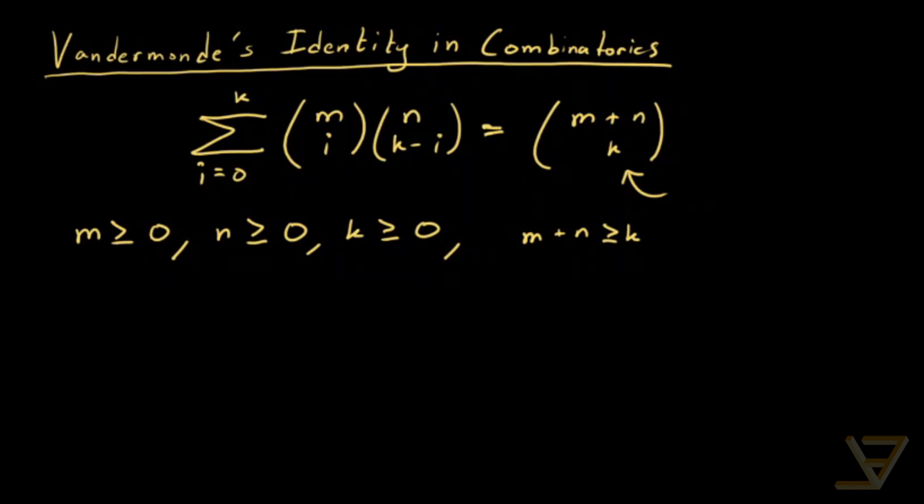So we have a sum like this and what I want you to notice is that the lower part i and k minus i, even though both the lower parts depend on the index i, the fact is that their sum is equal to i plus k minus i which is equal to k. So there's something interesting going on here. We also have a k here. So what we'll do is that we'll start off with this side here.